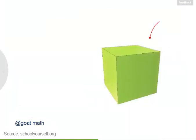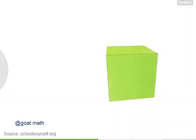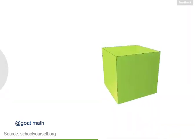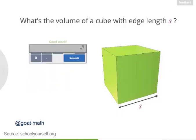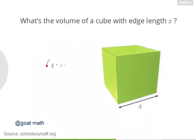Next, let's take a look at a cube, which is a rectangular prism whose edges all have the same length. Suppose the edge length for this cube is S. The volume of this cube is S times S times S, because all edges have a length of S. Another way to write S times S times S is S raised to the third power, which you can also read, appropriately enough, as S cubed.